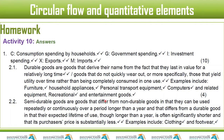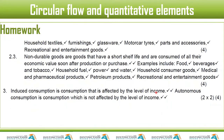Moving on to semi-durable goods: we have clothing, footwear, household textiles, furnishings, glassware, motor car tires, and parts and accessories. Motor car tires can be arguable — someone could say their tires last five or six years, so it's borderline.